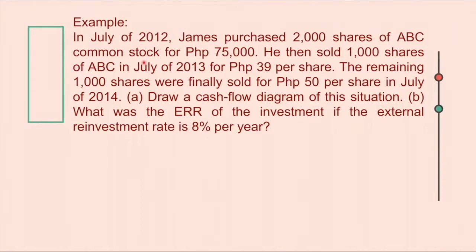Example: In July of 2012, James purchased 2,000 shares of ABC Common Stock for $75,000. He then sold 1,000 shares of ABC in July of 2013 for $39 per share.